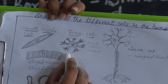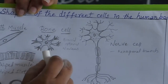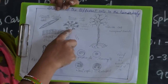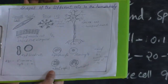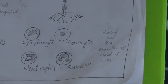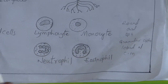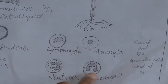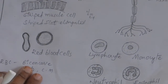This middle one is called a bone cell. Bone cells are of branched spherical shape — flat shape, spherical shape, branched shape — depending upon the presence of bones in our body. Next, coming to the WBC. These all come under WBC — white blood cells. WBC is divided into lymphocytes, monocytes, neutrophil, and eosinophil. These all are round and spherical in shape. These are the different shapes of cells in the human body.